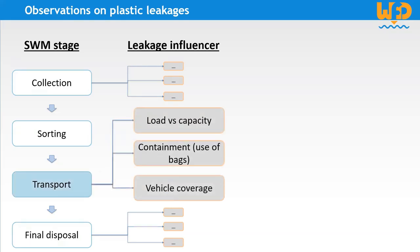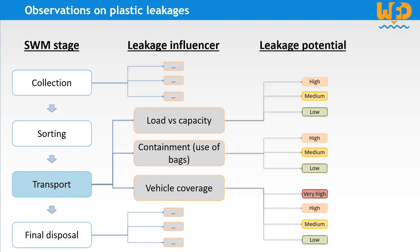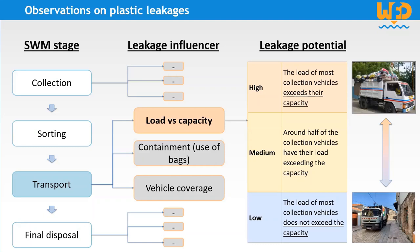For example, for the transport stage, these characteristics are the level of load compared to the capacity of the trucks, the waste containment — which is the use of plastic bags or disposal in bulk — and the use or not of a cover for the vehicles. For each of these influences, we determine from field observation what the leakage potential will be: low, medium, high or very high. For this, we use the reference tables available in the user manual and the Excel tool as a guide and compare with the observed situation.